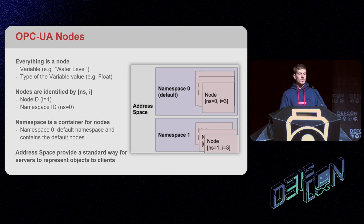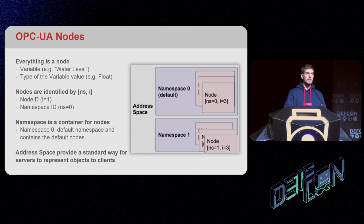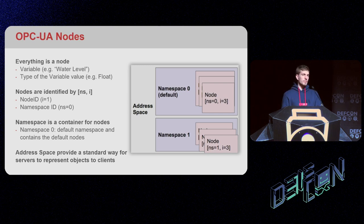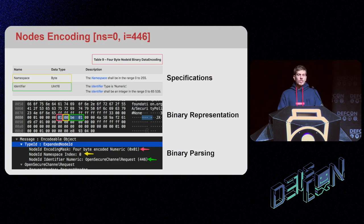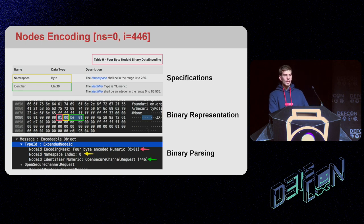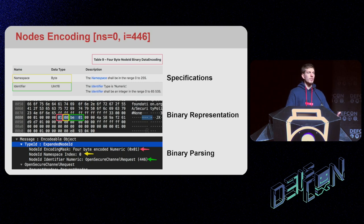Nodes are identified by namespace ID and node ID. To refer to a specific node in the entire address space, you specify the namespace and the identifier. The specifications tell us how to encode these nodes — for example, you can encode namespace with a single byte and identifier with two bytes. We read the specification to understand how to implement it ourselves, which was very beneficial.